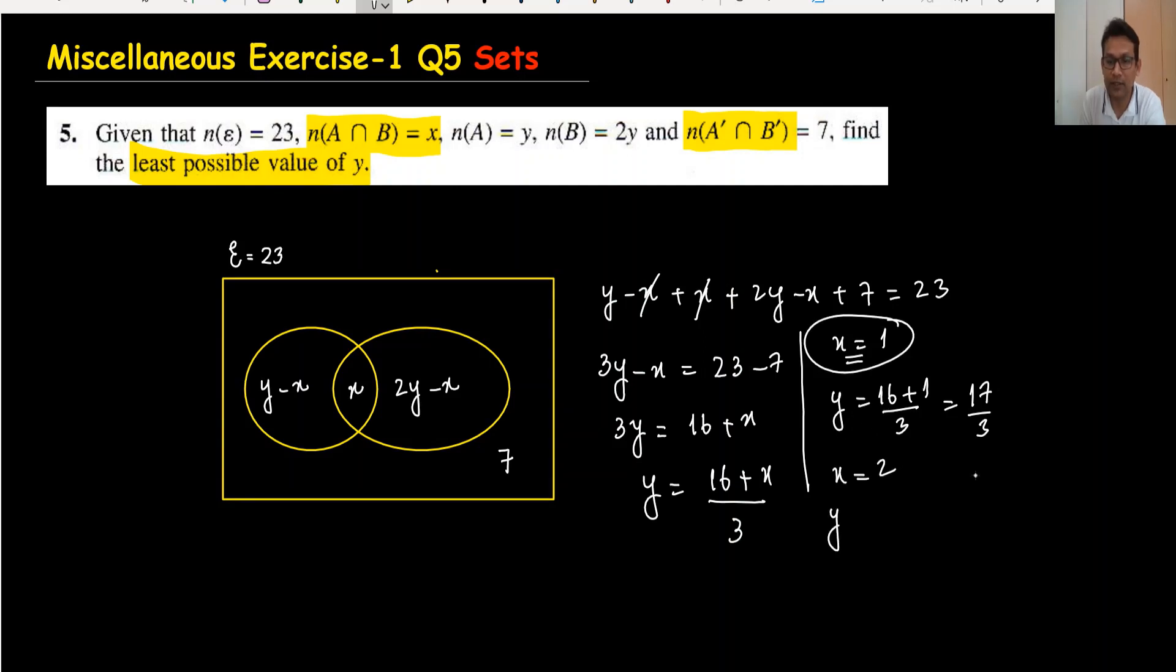Second option: x = 2. When I substitute x = 2, I get (16 + 2)/3 = 18/3, which gives y = 6.